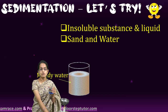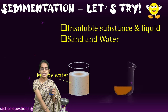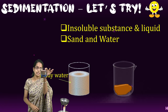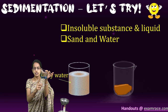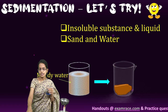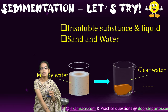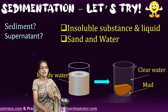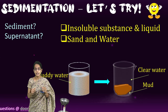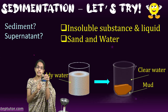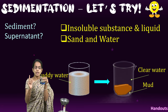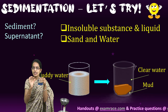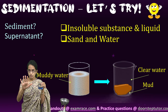Here's a simple demonstration. We have a beaker filled with muddy water. I stir it and leave it aside for a while. The mud settles towards the bottom and clear water moves to the top — this shows sedimentation. The settled material is the sediment, and the clear liquid above it is the supernatant. That makes the process of sedimentation.